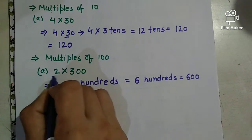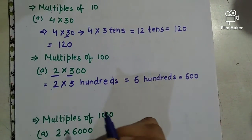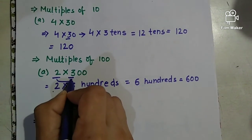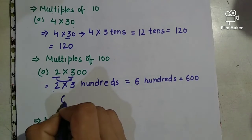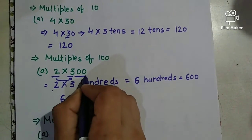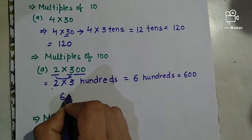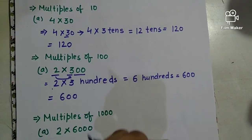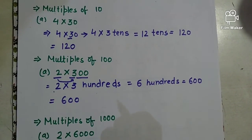We multiply from here: two threes are six, and we add the remaining two zeros. It's very easy to do.